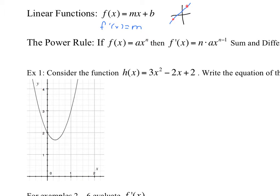A quick look at that in practice: if f of x is equal to 3x to the 4th, then f prime of x equals — we take that exponent and multiply it by the coefficient, so 4 times 3 is 12 — x to the 4 minus 1, which is 3. So f prime of x equals 12x cubed. That saves us time compared to using the definition of the derivative.